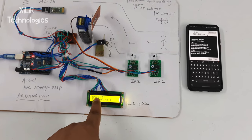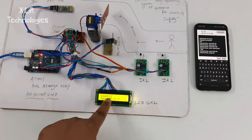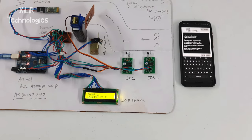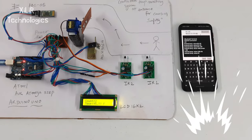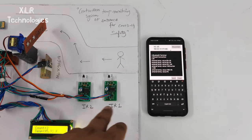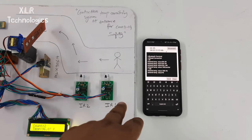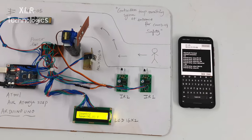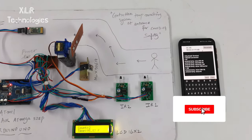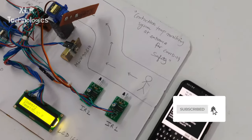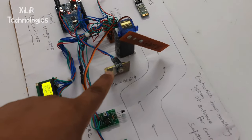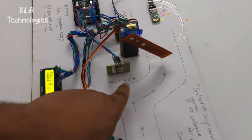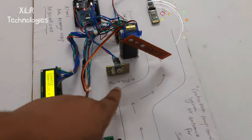This is the LCD — here we can see the number of persons counted coming inside the room, and the gate will open according to the temperature. We are using two IR sensors here; when someone comes in front and passes both IR sensors, the count will be increased. This is the temperature sensor MLX90614.